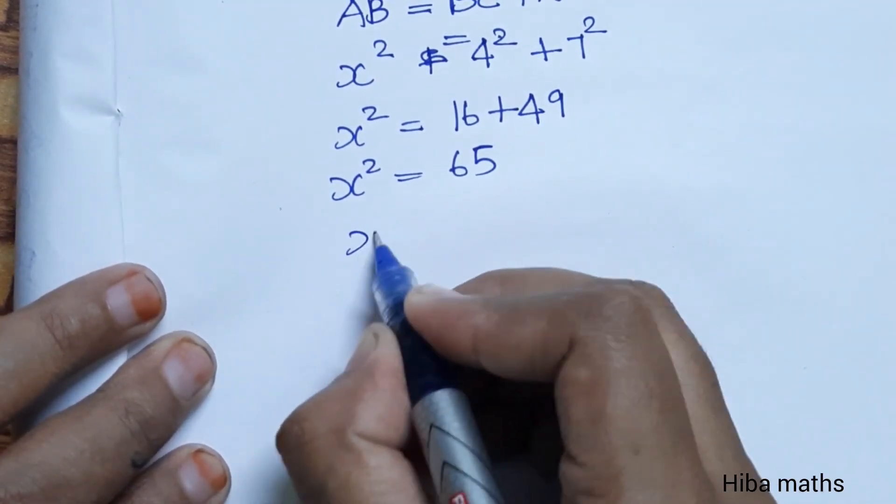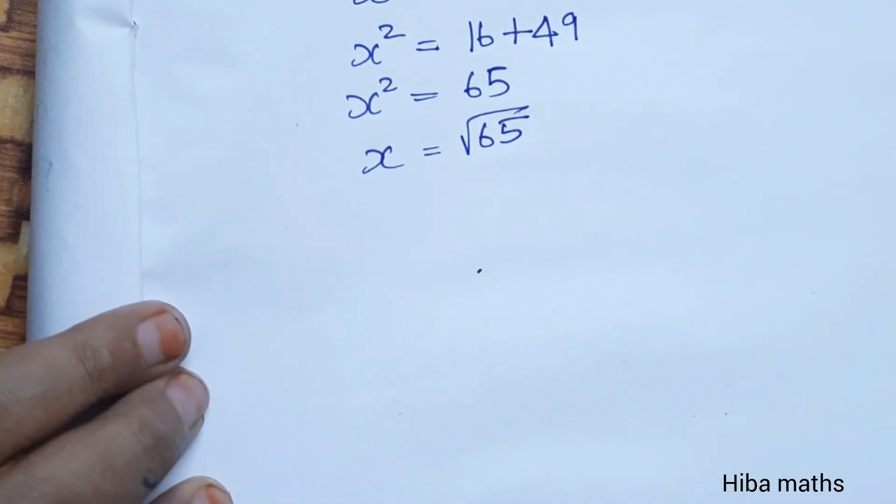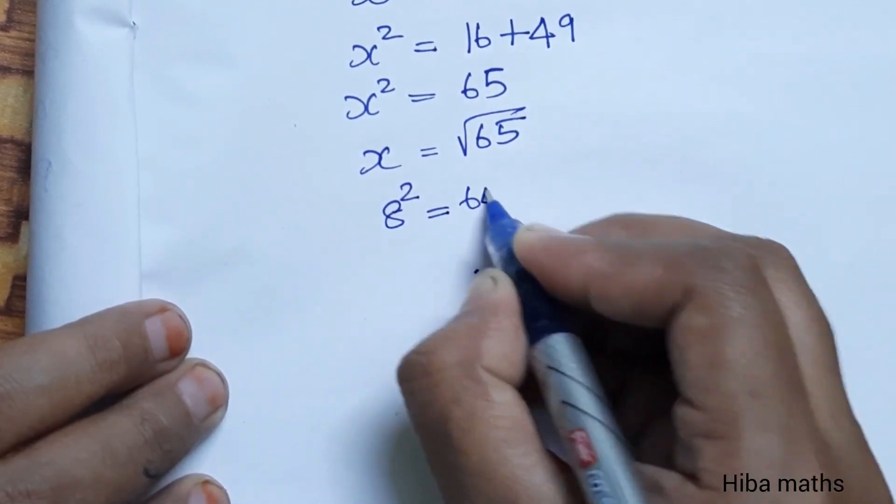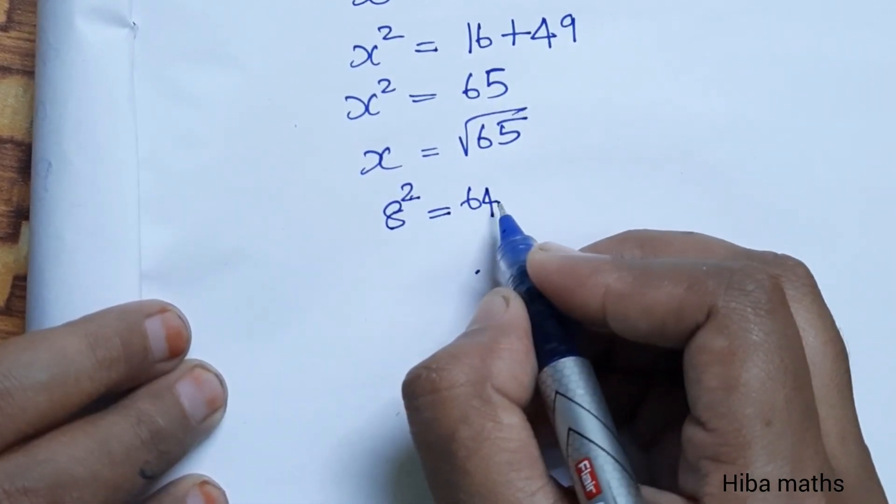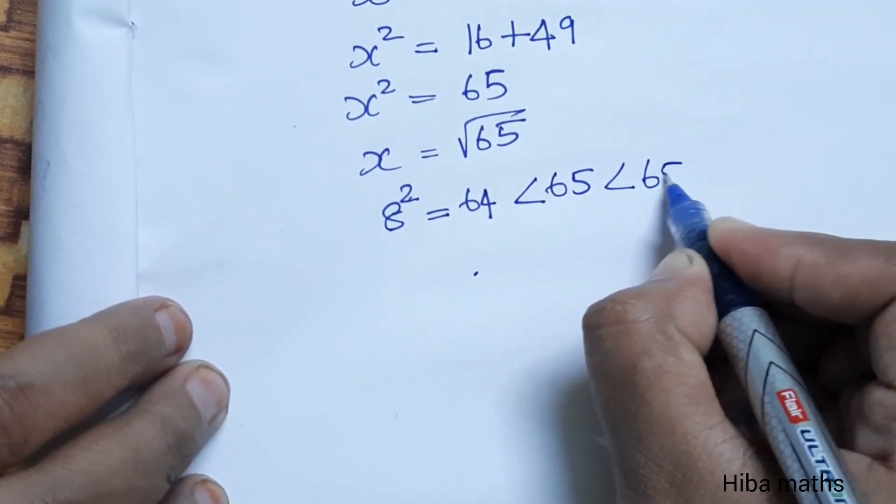Now, the value of x equals the square root of 65. Since 65 is not a perfect square, we calculate: the square root of 64 is 8, and the square root of 65 is approximately 8.